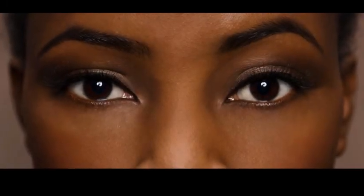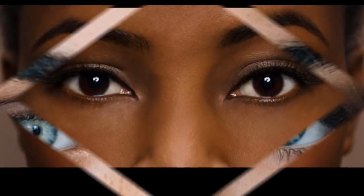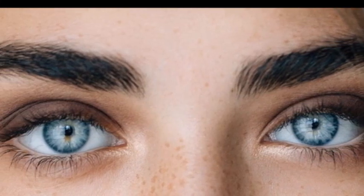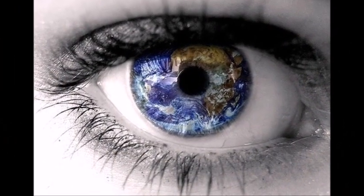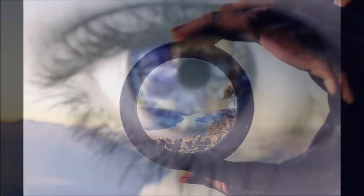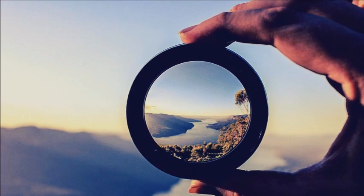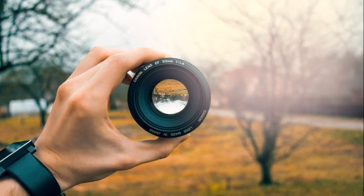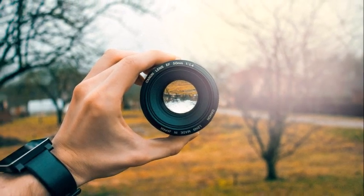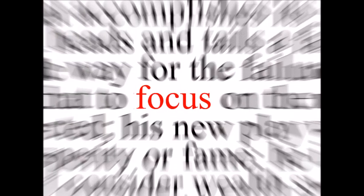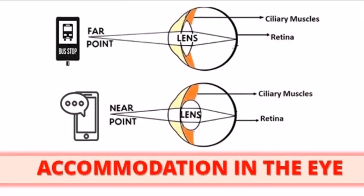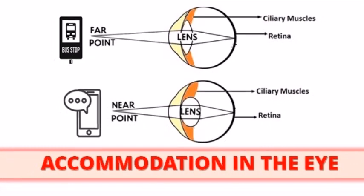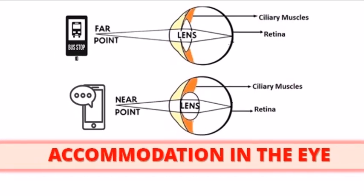Our eyes are considered the most valuable sense organs we have, allowing us to see and experience the world around us. And like cameras, our eyes have the ability to zoom in and zoom out in order to focus on objects at different distances. But what exactly is happening in our eyes to make these shifts in focus? In this video, I will look at the changes that take place in the eye during the process of accommodation.